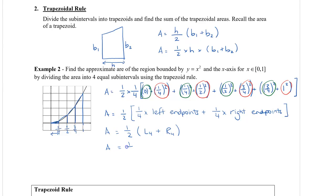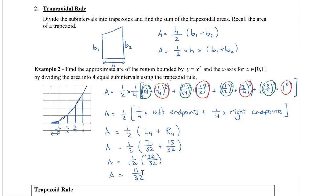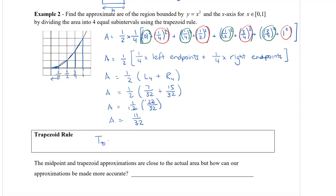Bringing in the numbers from before: L4 was 7 over 32 (that was our underestimate) and 15 over 32 was our overestimate. Putting it all together with the one-half factor, I get 11 over 32, which is very close to the actual area of one-third. Generally, the trapezoidal rule T_n equals one-half times the left endpoint approximation plus the right endpoint approximation. Your textbook will have a more formal definition, but this simpler form is easier to remember.